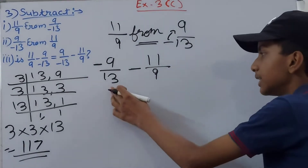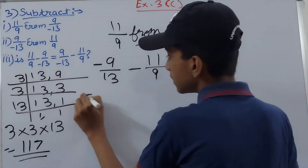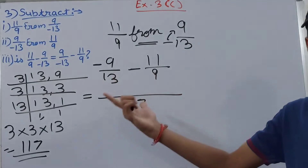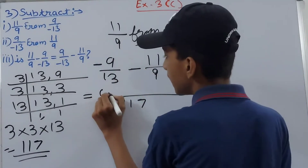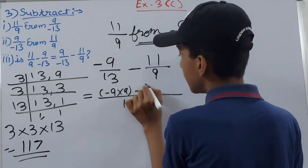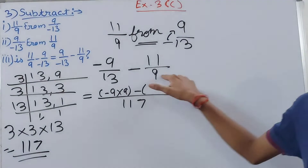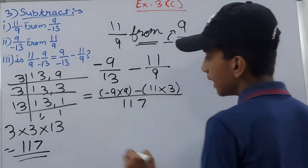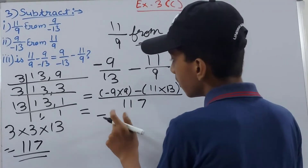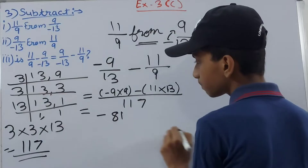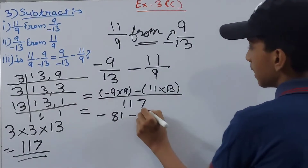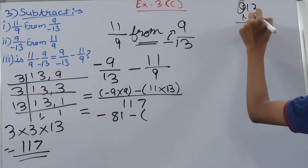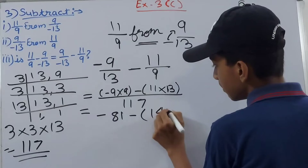Now we write the expression over 117. For the first term −9/13, we multiply by 9 (since 9 × 13 = 117), giving −9 × 9 = −81. For the second term 11/9, we multiply by 13 (since 13 × 9 = 117), giving 11 × 13 = 143. So we have −81 − 143, all over 117.